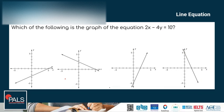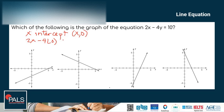Another example: which of the following is the graph of the equation 2x minus 4y equals 10? If the given is an equation and the choices are graphs, the easiest approach is to find the x and y-intercepts. The x-intercept is when y equals 0, so we plug in 0 for y: 2x minus 4 times 0 equals 10, giving x equals 5. So the x-intercept coordinate is (5, 0).